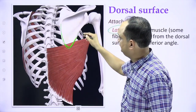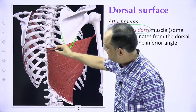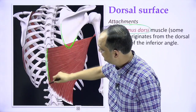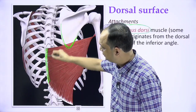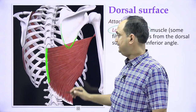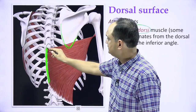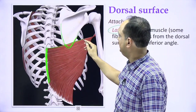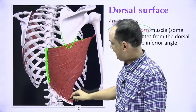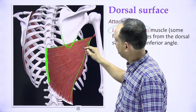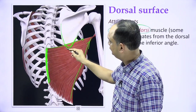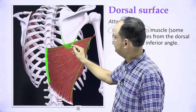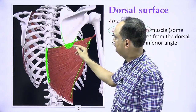Latissimus dorsi is basically a muscle in the lower back on the posterior aspect, coming from the lower six thoracic spines. But a small portion of latissimus dorsi arises from the dorsal surface of the inferior angle of the scapula. The major origin is from the lower thoracic spine, but as the muscle goes laterally its upper part overlaps this small area of the scapula — the dorsal surface of the inferior angle.